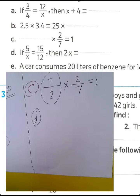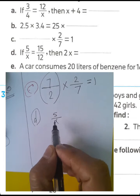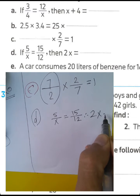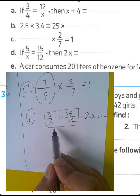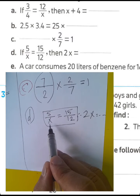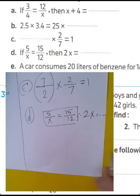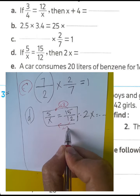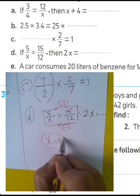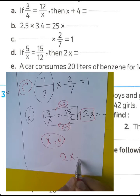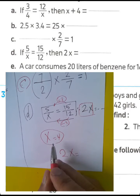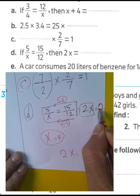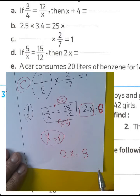Letter D: if 5 over x equals 15 over 12, find 2x. We know 15 divided by 3 equals 5 and 12 divided by 3 equals 4, so x equals 4. Since we want twice x: 2 times 4 equals 8. The answer is 8.